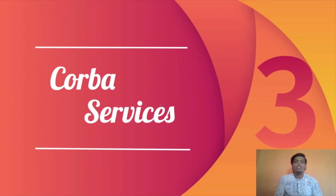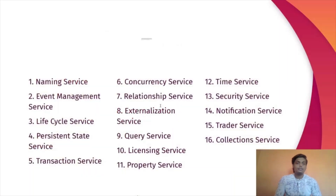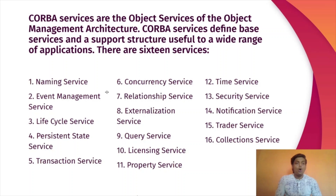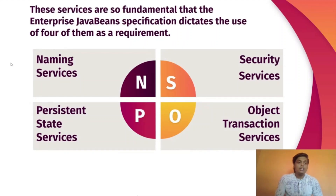The next subtopic is CORBA services. CORBA services are the object services of the Object Management Architecture. CORBA services define base services and a support structure useful to a wide range of applications. There are 16 services supported in CORBA. These services are so fundamental that the Enterprise JavaBeans specification dictates the use of four of them as a requirement: naming services, security services, persistent state services, and object transaction services.